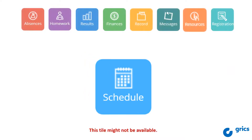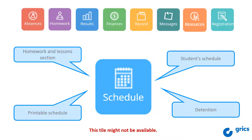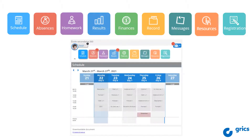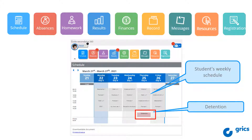Let's start with the Schedule tile. If available, you will find your child's schedule, including detention, homework, and a printable version of their schedule. The main part shows the schedule for the week. If a detention is scheduled that week, it will be displayed in the red box. You will get more information about the detention by clicking on the box.